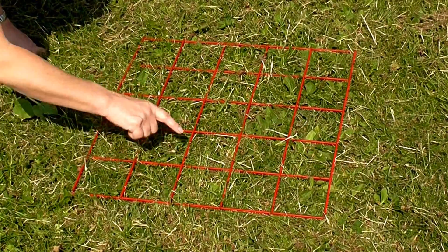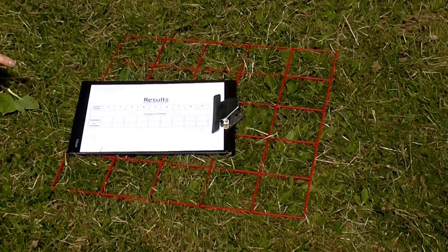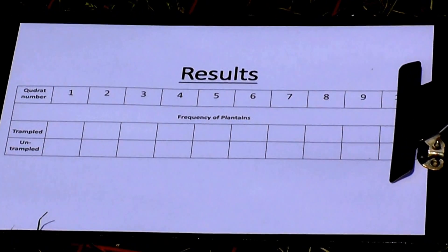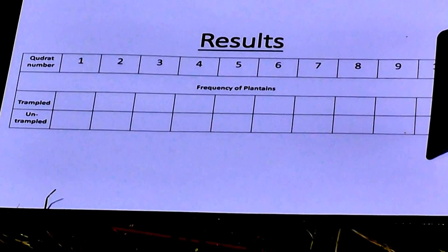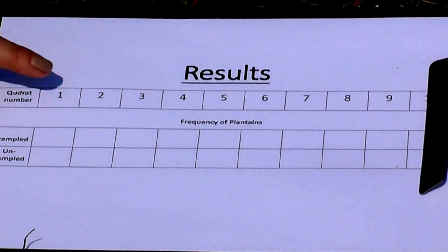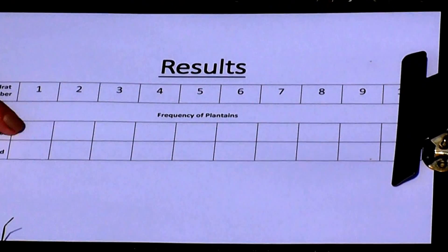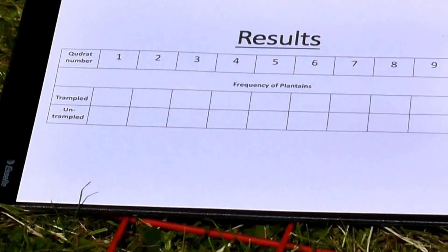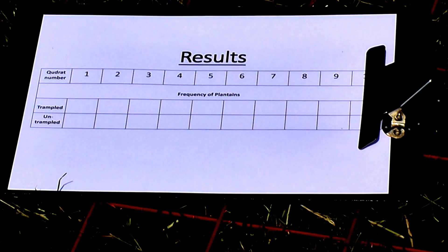I'm going to record this in my results table. I've got quadrat number, and I'm going to carry out 10 quadrats today — though 30 would be a better number. Generally, the higher the abundance of species and the richer the habitat, the larger the number of quadrats you carry out. I've got quadrat number here, and I'm recording the frequency of plantains — the number of plantains in each quadrat — on the trampled rugby pitch first. We're then going to carry out 10 random coordinates in a grid exactly the same, but in an area of grassland alongside the rugby pitch that's not trampled at all — just general parkland.